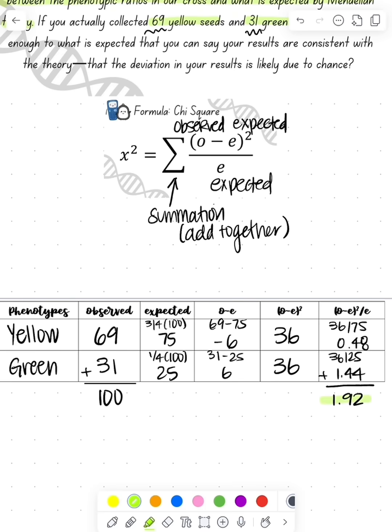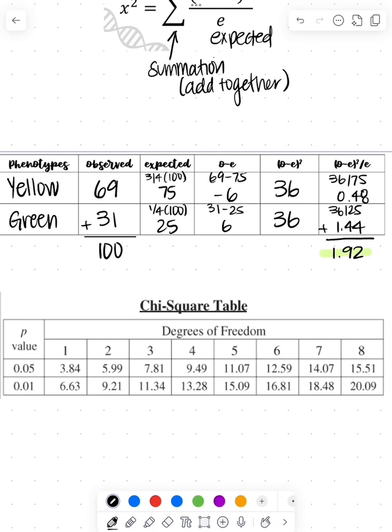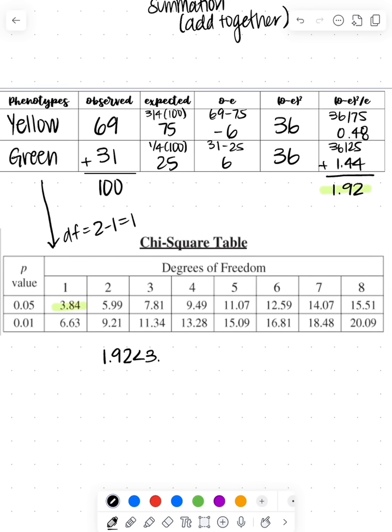Add those together, I get 1.92. Now I compare this to my table value. I'm looking at a degree of freedom of 2 minus 1 equals 1, because I have two different phenotypes. That gives me a critical value of 3.84. Since 3.84 is greater than 1.92, I fail to reject my null hypothesis. The results are consistent with Mendelian genetics.